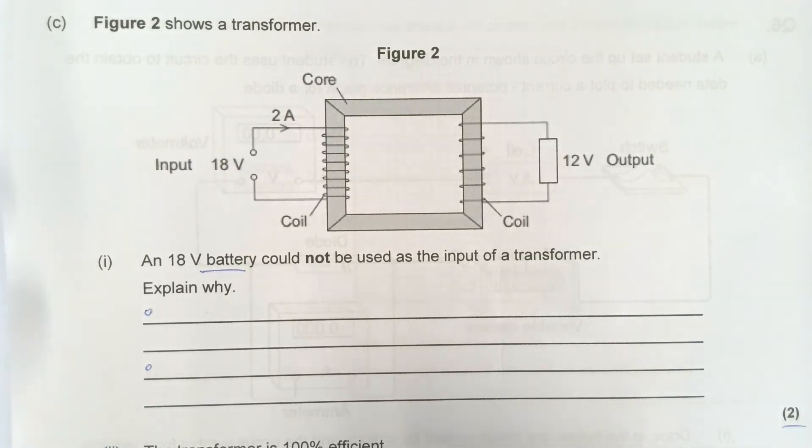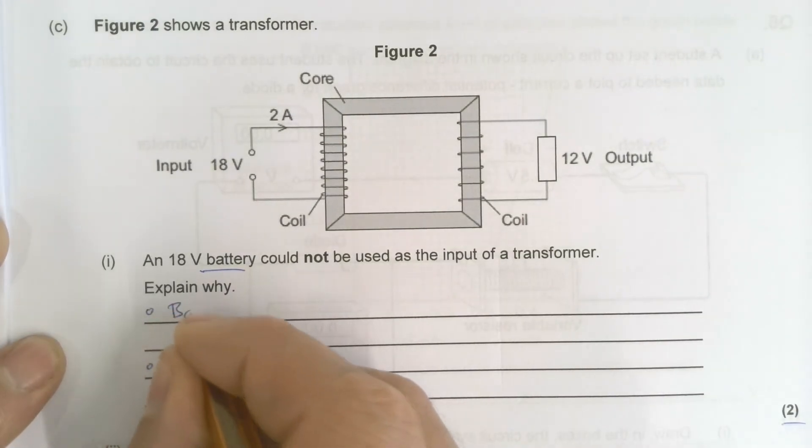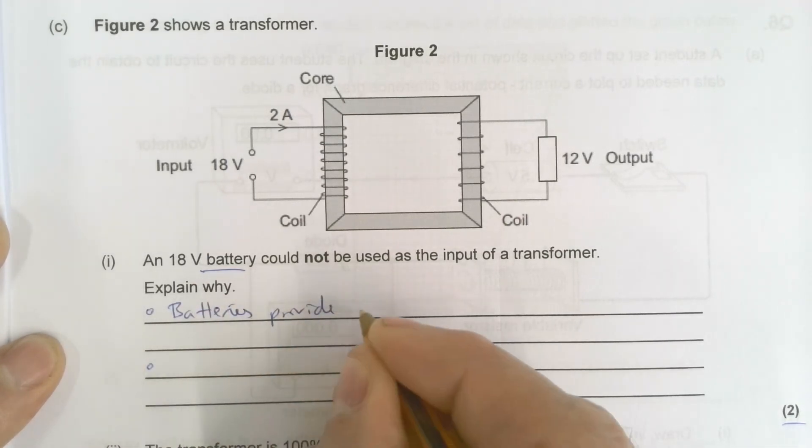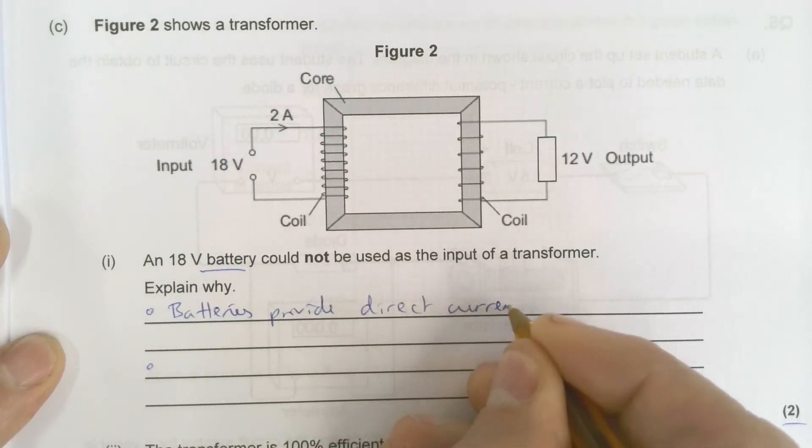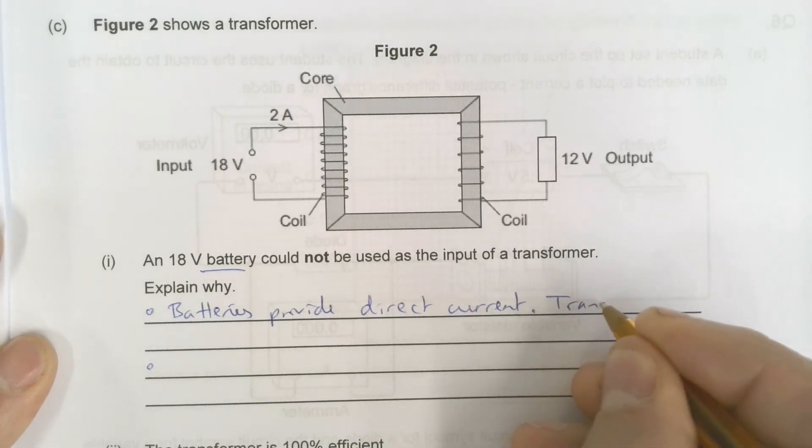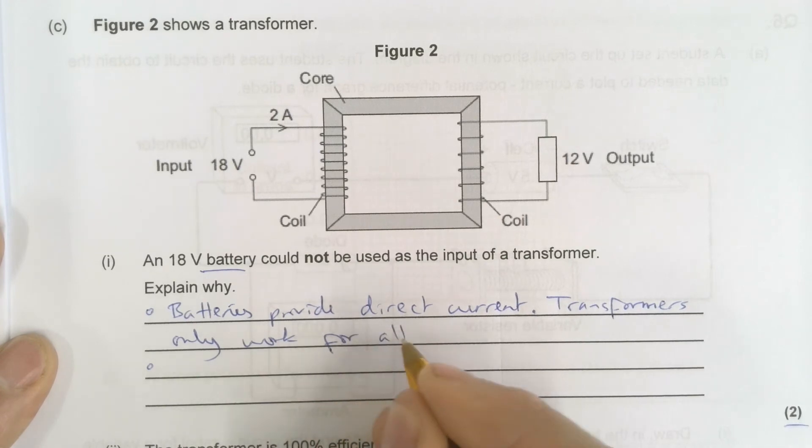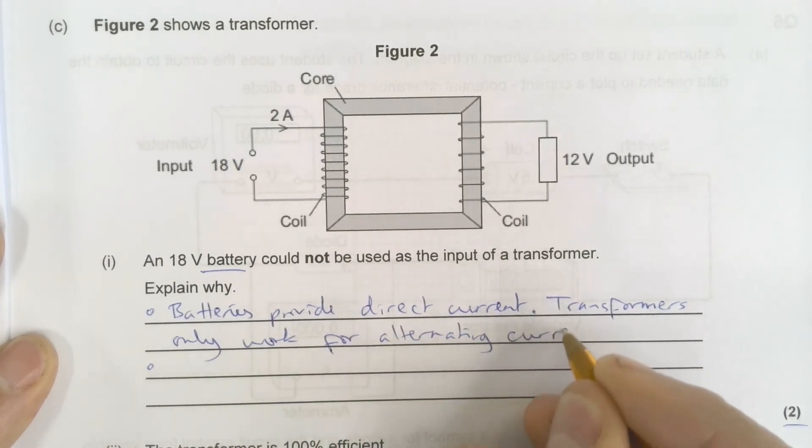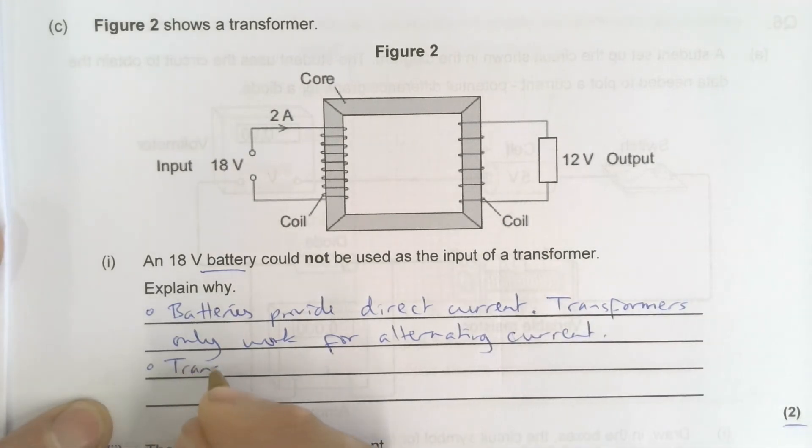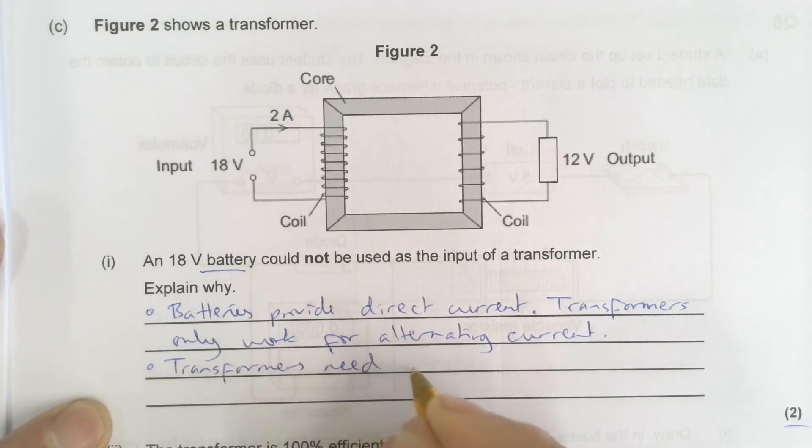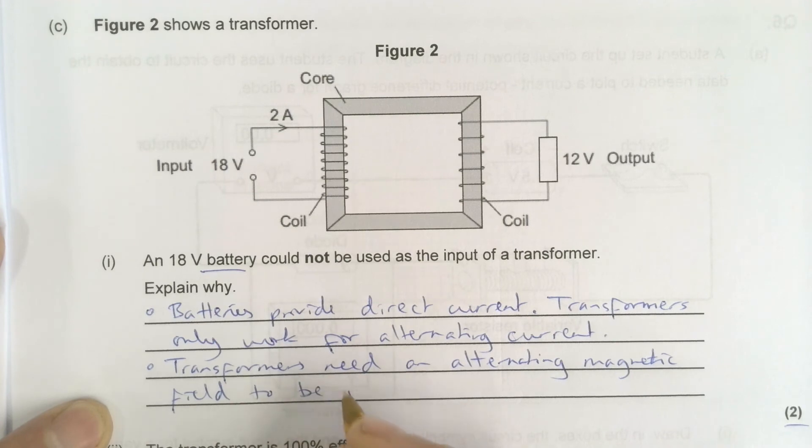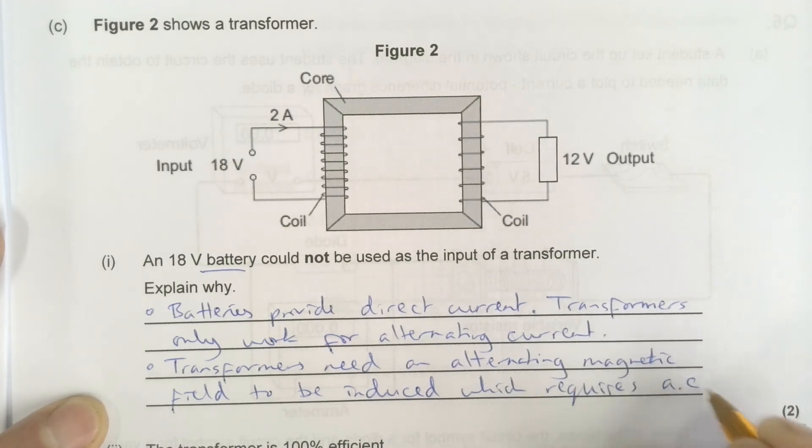Okay, so it couldn't be used as the input of a transformer because batteries provide direct current. Transformers that only work for alternating current. And the reason that is is because they need, so transformers need an alternating magnetic field to be induced, which requires AC which is short for alternating current.